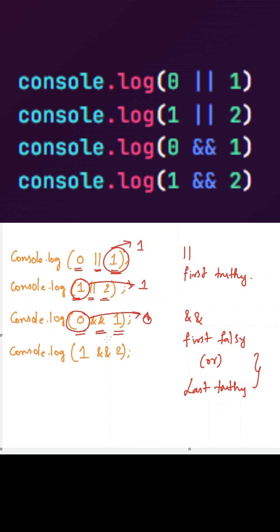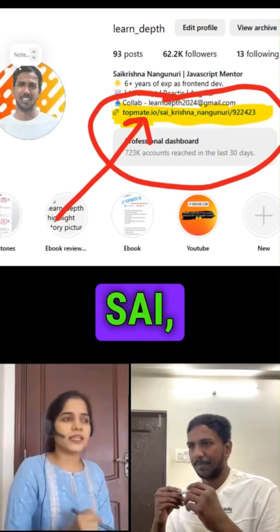Here we are using the AND operator between two truthy values, so it will return the last truthy value, which is two. So the final output will be: one, one, zero, and two.